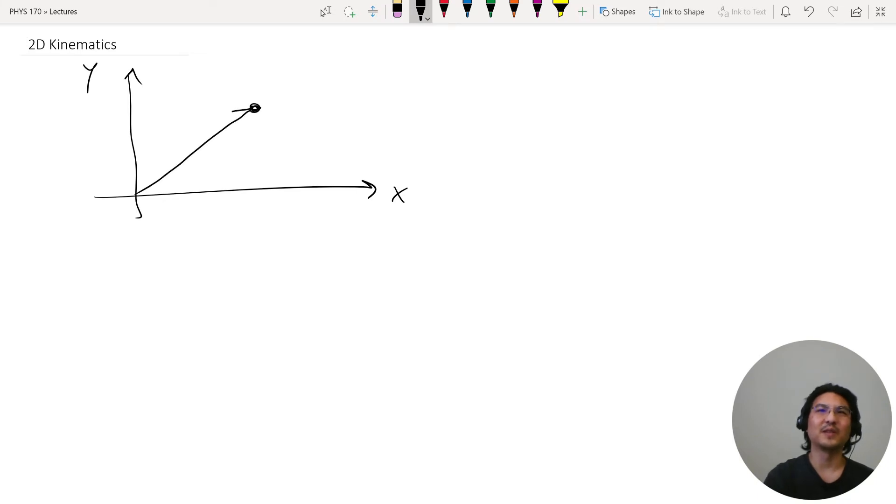Okay, so now the position of this object is some vector. But notice that you can decompose it into x and y components. So here's the x component of the position, the y component of the position, and then the object can move in space. Say it starts here, so this is the initial position, and then later it's at some final position.